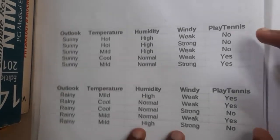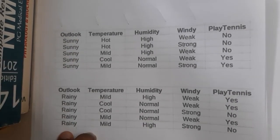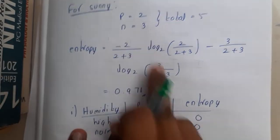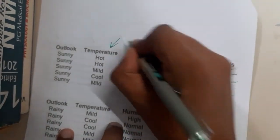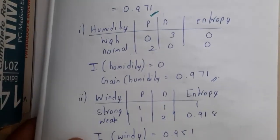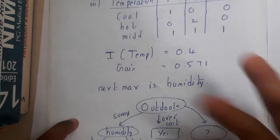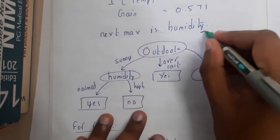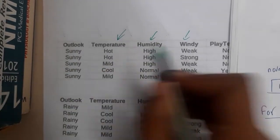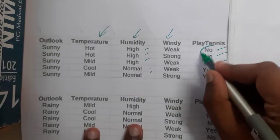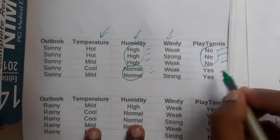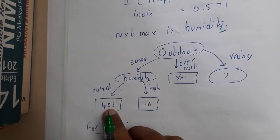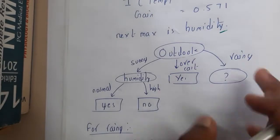Draw separate sub-tables for sunny and rainy. For the sunny sub-table, we have two yes's and three no's. Calculate its entropy. Then calculate entropy and information gain for the remaining attributes — humidity, wind, and temperature. Humidity turns out to be the maximum among them. Observing the sunny+humidity data: whenever humidity is high, the answer is no; whenever humidity is normal, the answer is yes.